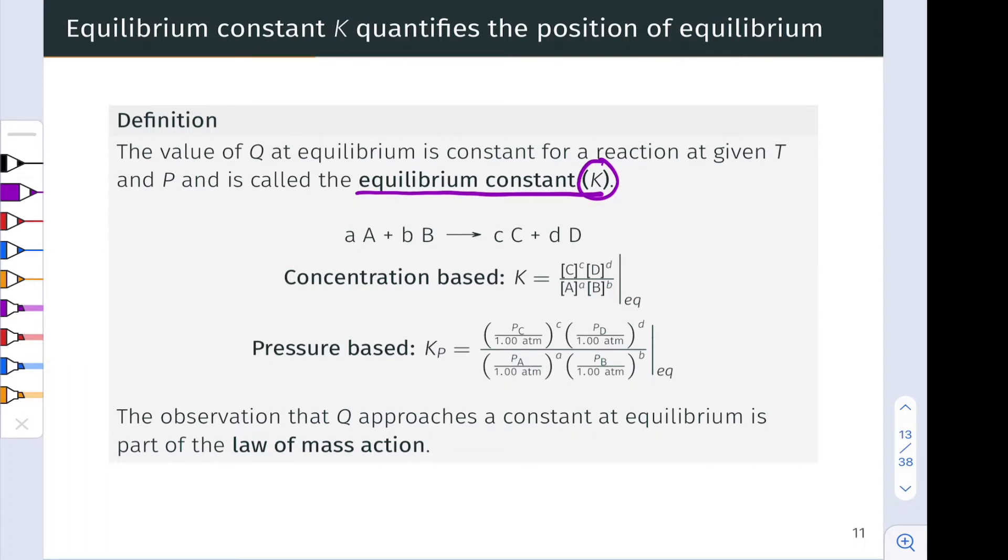So in general for a reaction aA plus bB going to cC plus dD, notice that we can think of K as the reaction quotient expression at equilibrium. So we can write K as molarity of C raised to the c power times the molarity of D raised to the d power divided by the molarity of A raised to the a power times the molarity of B raised to the b power. This idea of products over reactants which we've already seen.